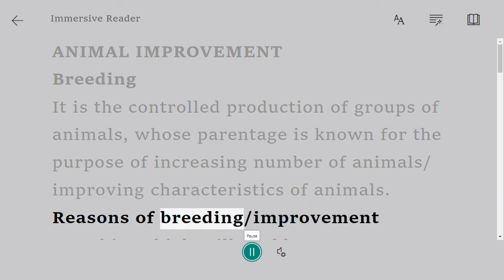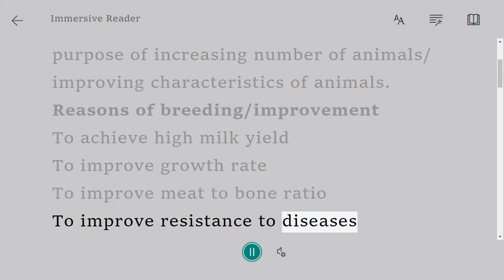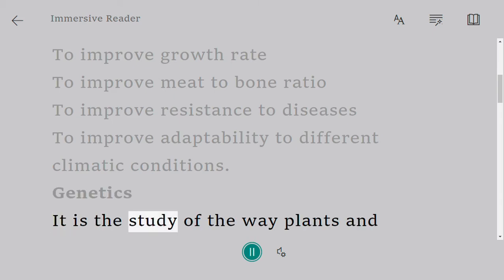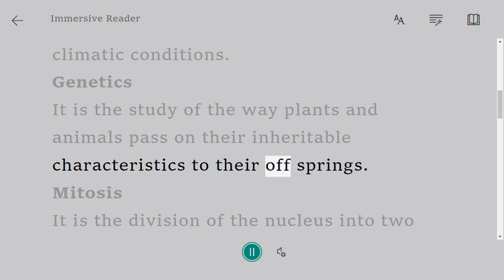Reasons for breeding and improvement: to achieve high milk yield, to improve growth rate, to improve meat to bone ratio, to improve resistance to diseases, and to improve adaptability to different climatic conditions. Genetics is the study of the way plants and animals pass on their inheritable characteristics to their offspring.